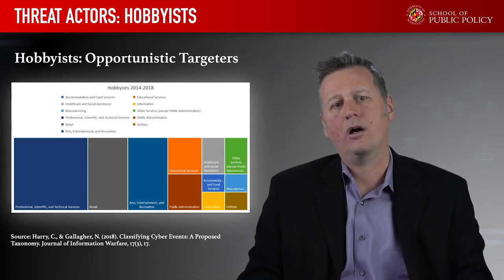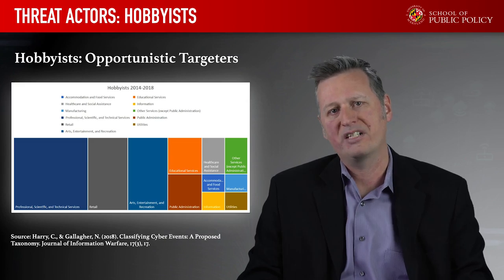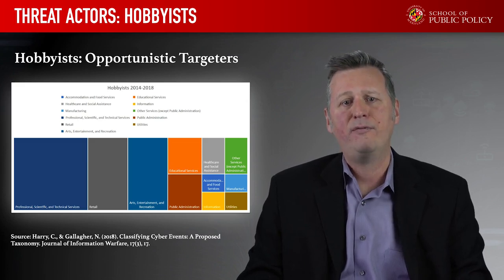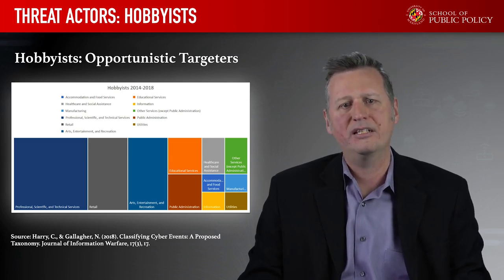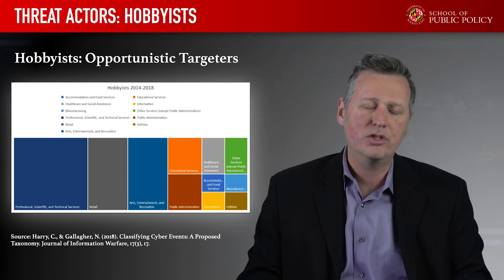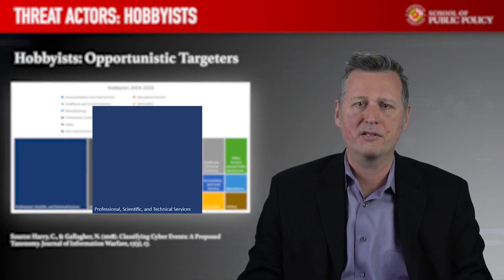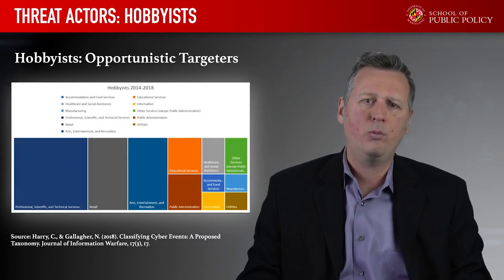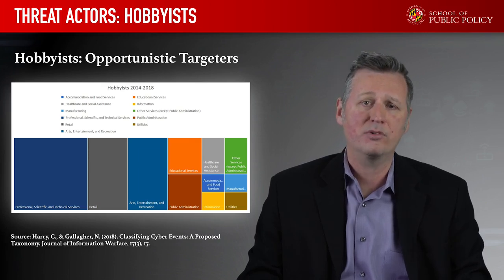Hobbyists are really opportunistic targeters. They look for where vulnerabilities might lie, do broad-based scanning of the internet, identify where a particular vulnerability exists, and then execute on it. Looking at data from 2014 to 2018, the vast majority of attacks conducted by hobbyists are against professional services — things like dentist offices or accountants — because these tend to be weakly defended networks that hobbyists can take advantage of.